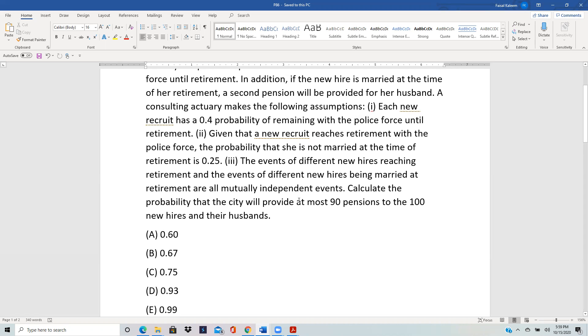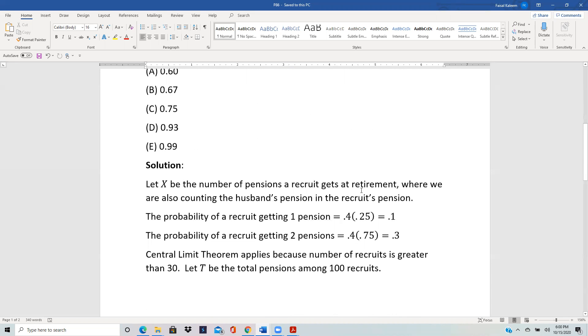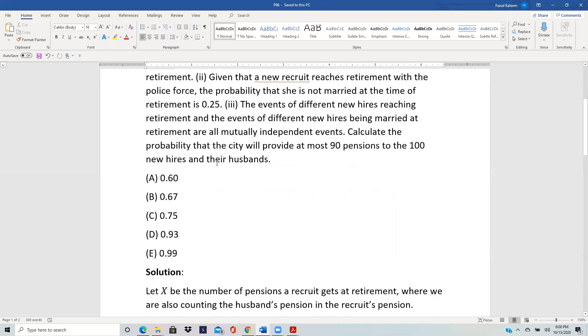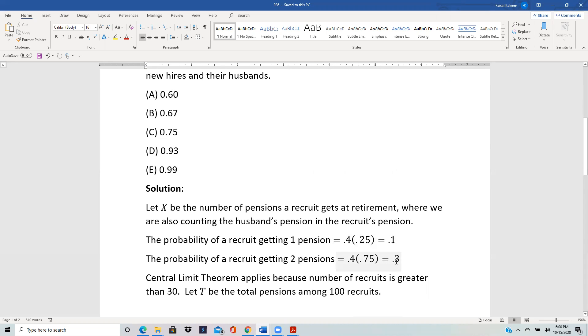The probability that a recruit will get one pension is 0.4 times 0.25, because the recruit will get one pension if she makes it to retirement, which is 0.4, and she is not married, so 0.4 times 0.25, that's 0.1. And then if she's also married at the time of retirement, then she'll get two pensions, and the probability of that will be remaining in the force at the time of retirement, 0.4, times the probability of getting married, which will be 0.75, right, one minus 0.25. So that will be 0.3. So that's the probability of getting two pensions.